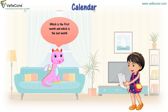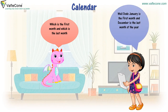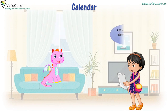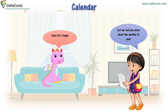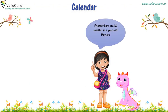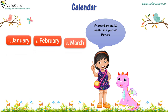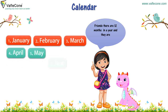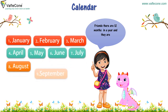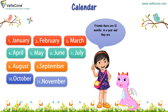Which is the first month and which is the last month? Well Dodo, January is the first month and December is the last month of the year. Let me tell you more about the months of the year. Friends, there are 12 months in a year and they are January, February, March, April, May, June, July, August, September, October, November, and December.